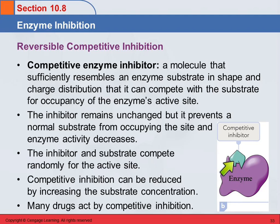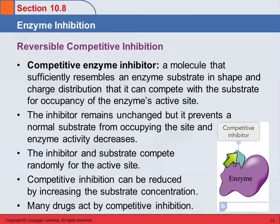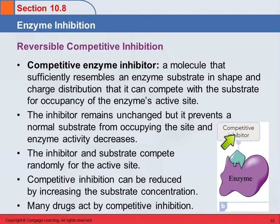You can reduce the effect by increasing the substrate concentration. When the inhibitor leaves, what affects the next molecule coming in is relative concentration — if you've got a lot of inhibitors, it's more likely to be an inhibitor that enters. If you increase the concentration of the substrate, you increase the chances that a substrate molecule will go in there. So you can overcome competitive inhibition by adding more substrate.